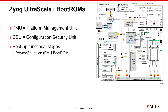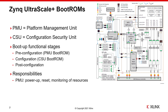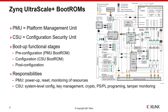The CSU initializes the on-chip memory and determines the boot mode. In the configuration stage, the CSU ROM interprets the boot header to configure the system and load the processing system's first-stage bootloader code into the on-chip RAM. After FSBL execution starts, the CSU ROM code enters the post-configuration stage, responsible for system tamper response. The PMU controls power-up, reset, and monitoring of resources, including inter-processor interrupts and power management registers. The CSU manages secure and non-secure system-level configuration, and also contains the key management unit, crypto accelerators, and the PS-PL programming interface. PL refers to programmable logic.